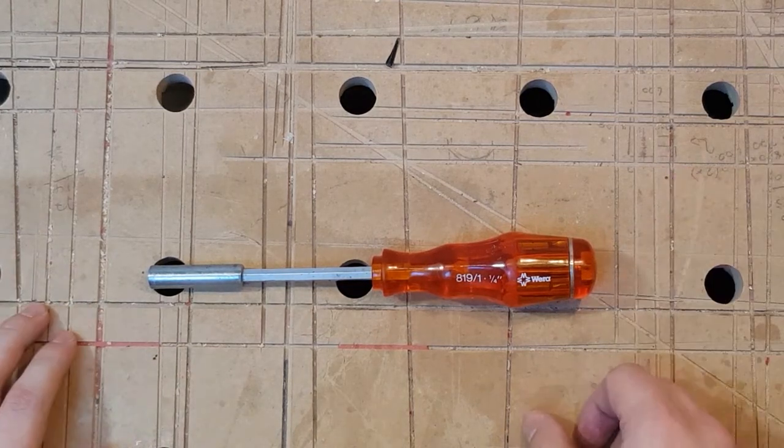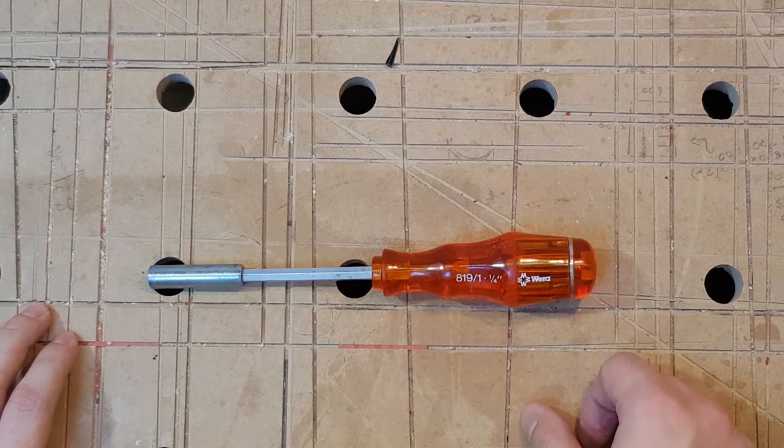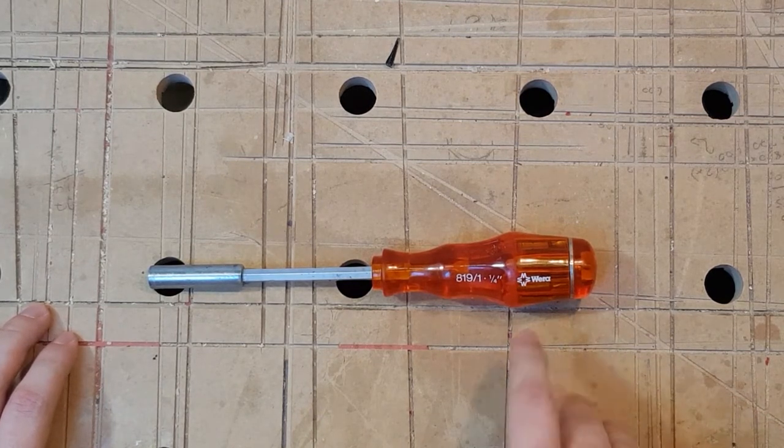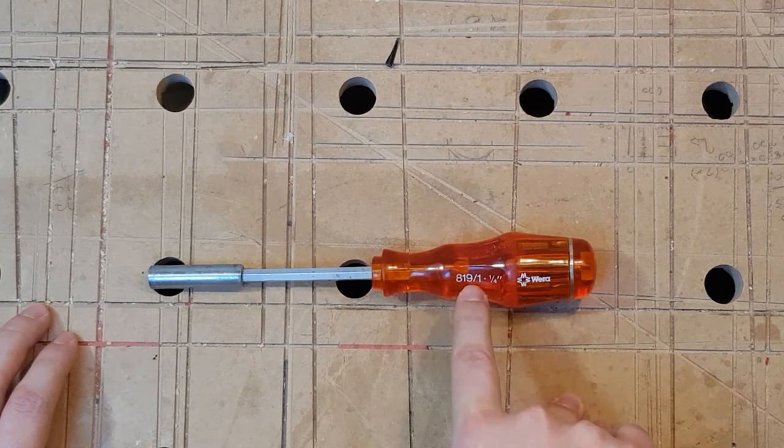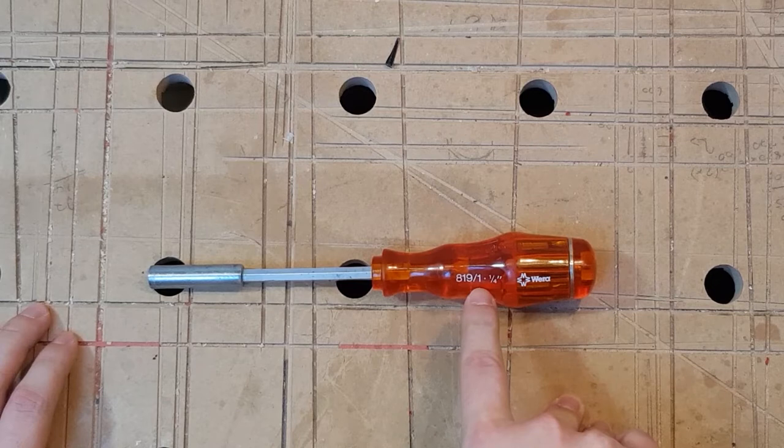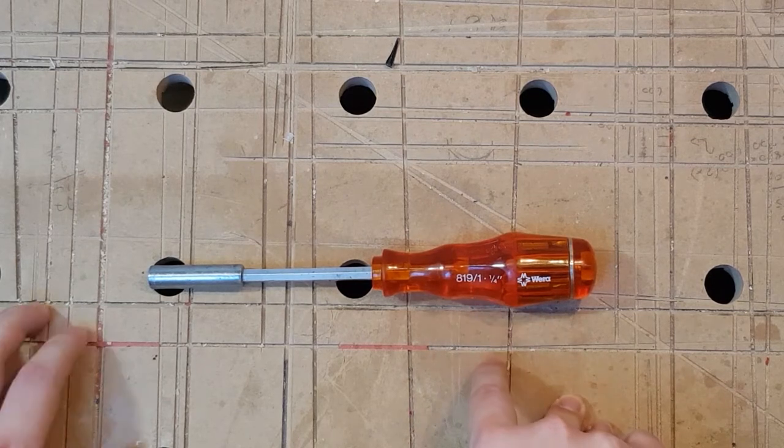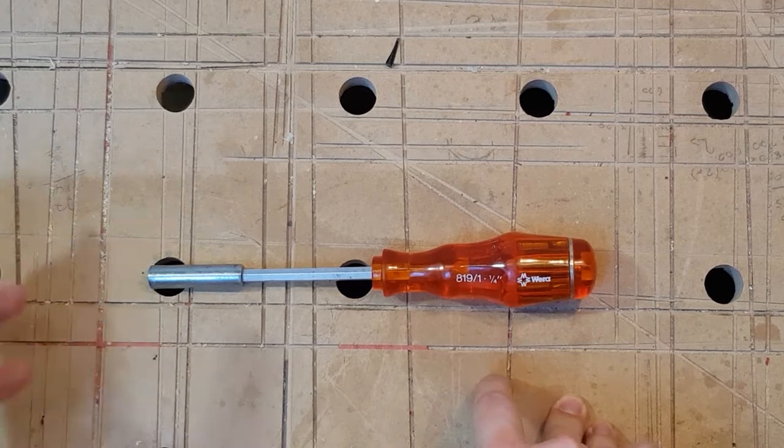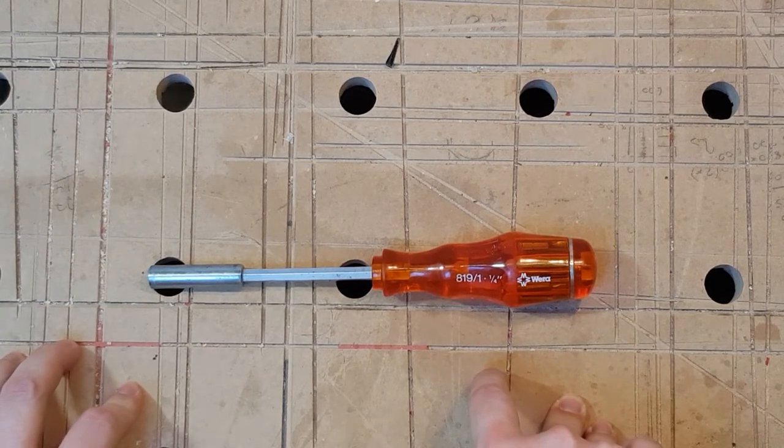Welcome again. This is a quick look at a flea market score I found. It's the VERA 119-1 handle or screwdriver with a quarter inch hex on the tip to put bits in it.